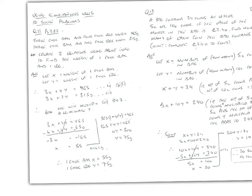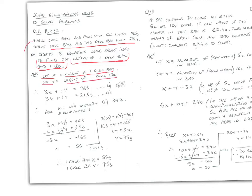Let's look at using simultaneous equations to solve a problem. 3 chocolate bars and 4 chocolate eggs weigh 465 grams; 3 chocolate bars and 2 chocolate eggs weigh 315 grams. Find the weight of 1 chocolate bar and 1 chocolate egg. Let x equal the weight of one chocolate bar and y equal the weight of one chocolate egg. So 3x+4y = 465 and 3x+2y = 315. We multiply the lower line by 2 to get 4y, so we can cancel the 4y above.